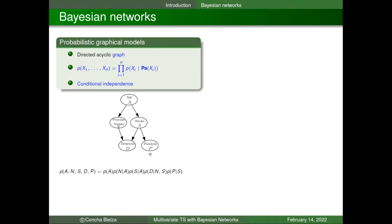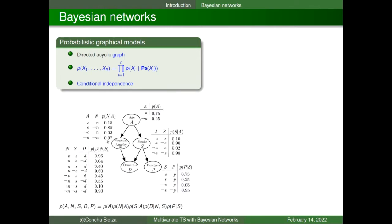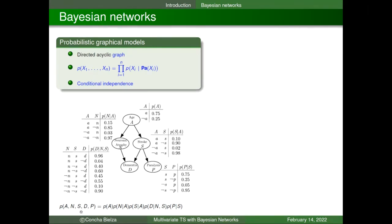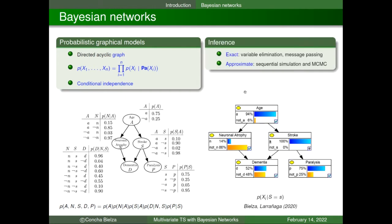For example, neuronal atrophy and stroke depend on age, and both influence dementia. The second part consists of the parameters — conditional probability tables including local distributions for each node given its parents in the graph. This factorization gives rise to the joint distribution of all variables, exploiting the most important concept underlying Bayesian networks: conditional independence between triplets of variables. With a Bayesian network we can perform any kind of probabilistic reasoning or statistical inference with exact or approximate algorithms.